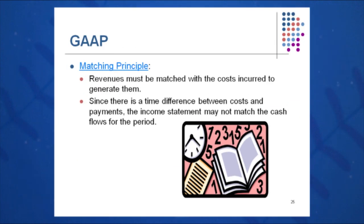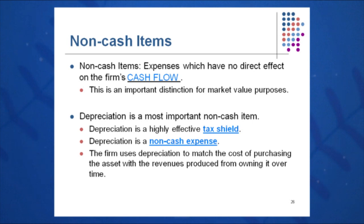Another GAAP principle is matching — we try to match our sales with our costs, our revenues with our expenses. A popular tool for this is depreciation. Some equipment lasts a long time, so we match portions of its cost with the sales it generates. If you buy a Ford Explorer for your company, there are no dollars literally blowing out the window as you drive, but you are allowed to depreciate that asset and match the cost with the revenues it generates.